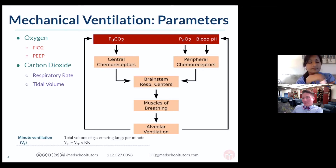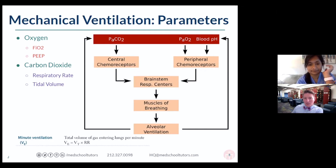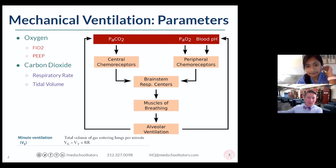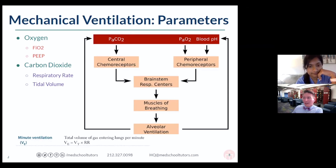For reference, somewhere around 60 millimeters of mercury is roughly around an 88% oxygen saturation. And that's the number clinically that we really hate to go below — around 88-89% in that territory. So when the oxygen falls below 70 into the 60s or below, that's where we're going to want to intervene.